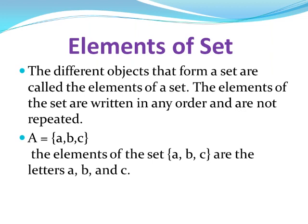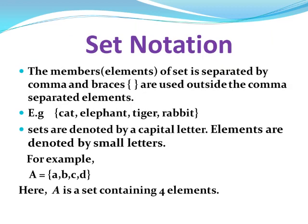For example, ABC: the elements of the set ABC are the letters A, B, C. Set notation: The members or elements of a set are separated by commas and brackets are used outside the comma-separated elements. Example: cat, elephant, tiger, rabbit.